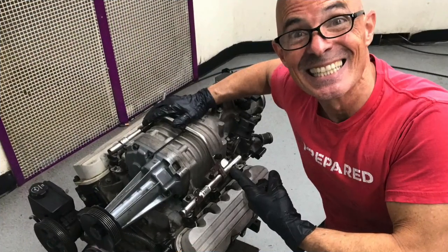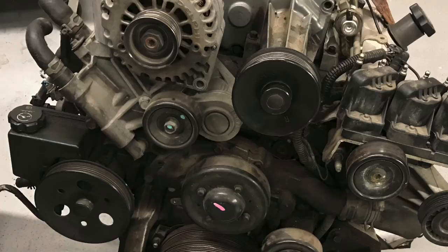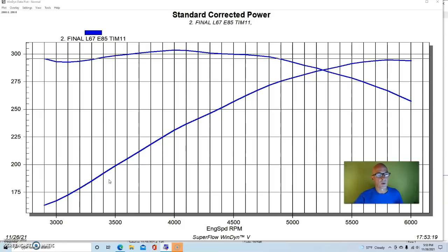So, with both of the L67 and the L32, we ended up stepping up from the pump gas, which we ran on the last test, up to E85, and here's what happened. We ran them both with stock pulley, stock boost level right at about 8.1 or 8.2 pounds, but we ran with the E85, and we were able to turn the timing up.